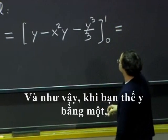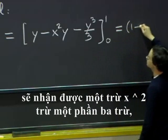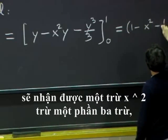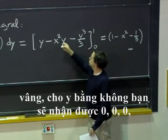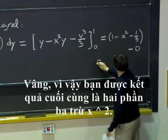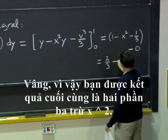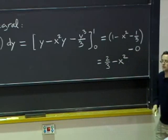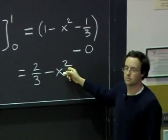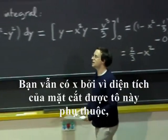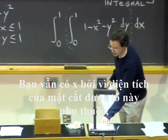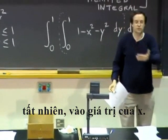And so when you plug y equals 1, you will get 1 minus x squared minus 1 third minus, well, for y equals 0, you get 0, 0, 0, 0. So, nothing changes. OK, so you are left with 2 thirds minus x squared. OK, and that is a function of x only. Here you shouldn't see any y's anymore because y was your integration variable. But you still have x. You still have x because the area of this shaded slice depends, of course, on the value of x.